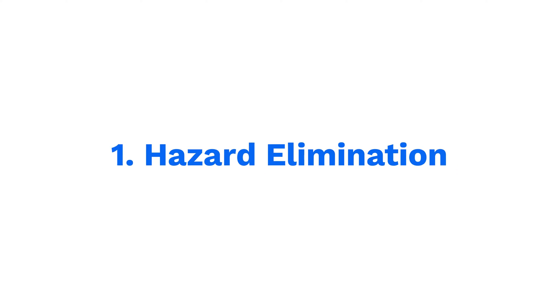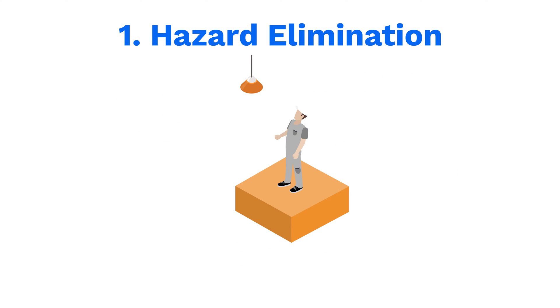Hazard elimination is the most effective way to remove risk — by removing the hazard itself. This involves redesigning the worksite or changing work practices to remove the fall hazard entirely. It's the most direct and effective method of fall protection, and by eliminating the hazard, the need for further protective measures becomes redundant. This level is the most desirable outcome in the hierarchy of fall protection.